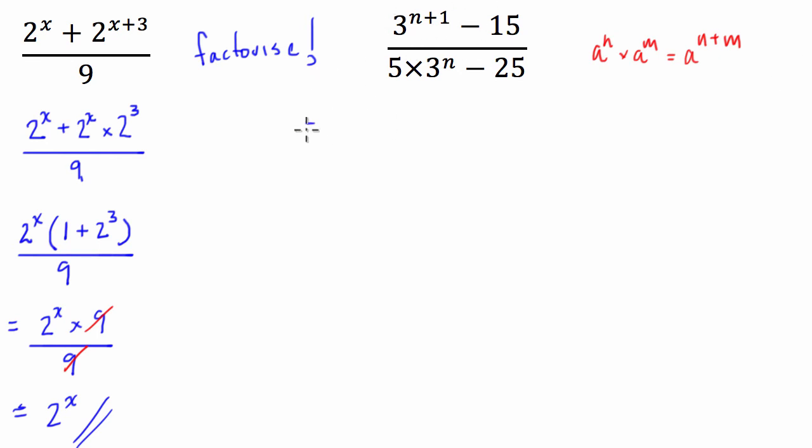So this is going to be equal to 3 to the power of n times 3 to the power of 1 minus 15, which we can just write as 15. All divided by, I'm going to put it in the same order as I have at the top, 3 to the power of n times 5 minus 25.